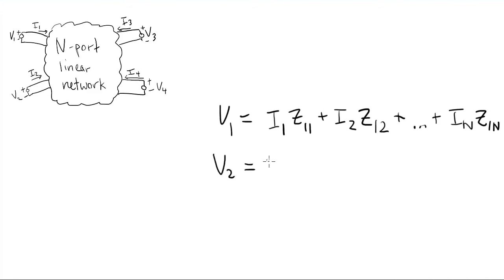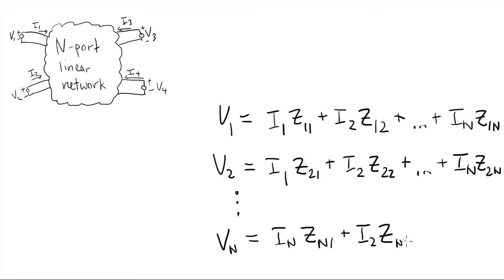For example, at port 1, we have voltage V1, which is made up of current I1 interacting with Z11, plus the current into port 2 interacting with Z12, and so on until the current IN interacting with Z1N. We can write a similar expression for V2, except you notice that I1 interacts with Z21, and I2 interacts with Z22, and so on. And of course, you can keep writing similar expressions up to port N.